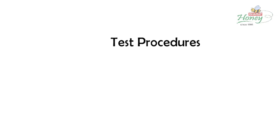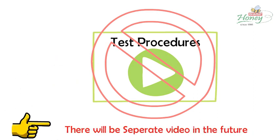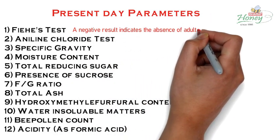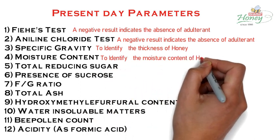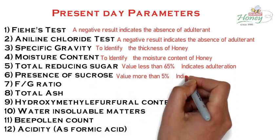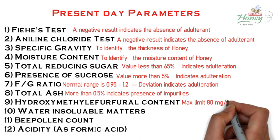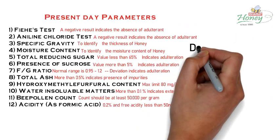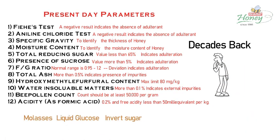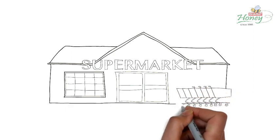Here we will discuss both the present-day parameters and the advanced tests which are not yet implemented. Note that the procedure of each test is not in scope of this video, as it may be very long and irrelevant to non-technical persons — there will be a separate video on this in the future. Present-day parameters include: Fiehe's Test, Aniline Chloride Test, Specific Gravity, Moisture Content, Total Reducing Sugar, Presence of Sucrose, and Fructose-Glucose Ratio. These tests were sufficient to counter molasses, liquid glucose, and invert sugar, but were not designed to identify High Fructose Corn Syrup and Rice Syrup — a significant flaw that has encouraged many brands to sell these adulterants as pure honey.